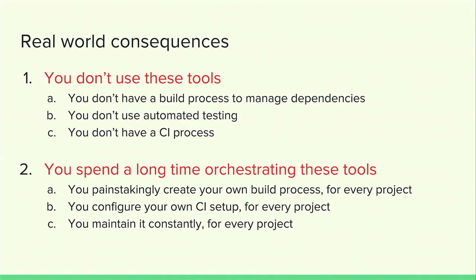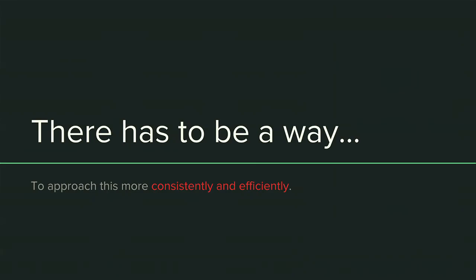Let's talk about some real-world consequences. One consequence is you just might not use this stuff — a lot of people say I'm going to nope out of here, I've got to learn all of this, make this stuff work together, maintain it — never mind, I don't want a build process, I don't want to automate testing, I don't want a CI process. I was in that boat for a while. The other option is DIY: you painstakingly create a build process, configure a CI process, and then maintain it all the time. An update comes out to one thing and everything breaks. So there has to be a way to do this better — to approach this consistently and efficiently.